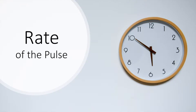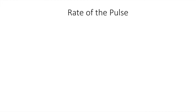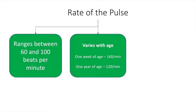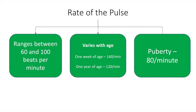The normal pulse rate ranges between 60 and 100 beats per minute. But this varies with age, in that an infant at one week of age will have a pulse rate of 140 per minute, a child at a rate of 120 per minute, and at puberty this reduces to between 72 to 80 beats per minute.